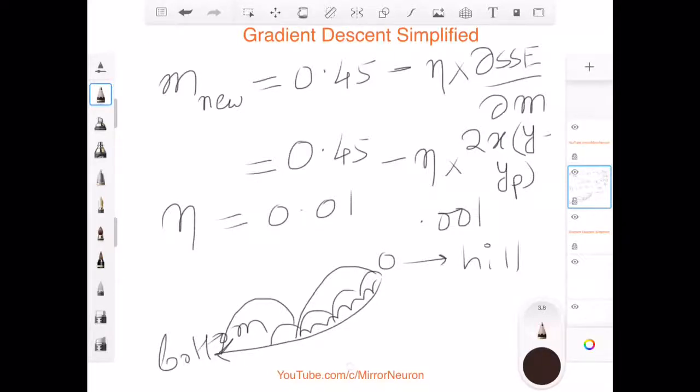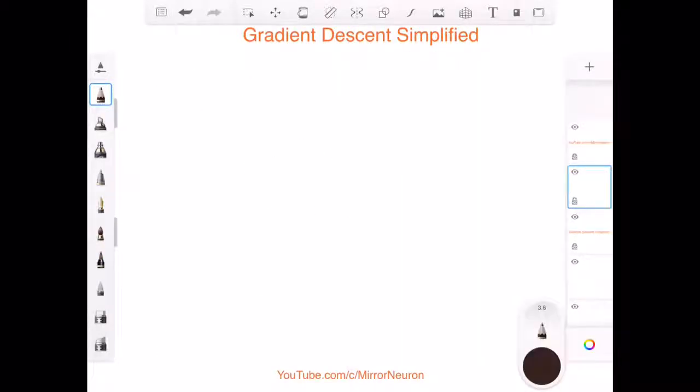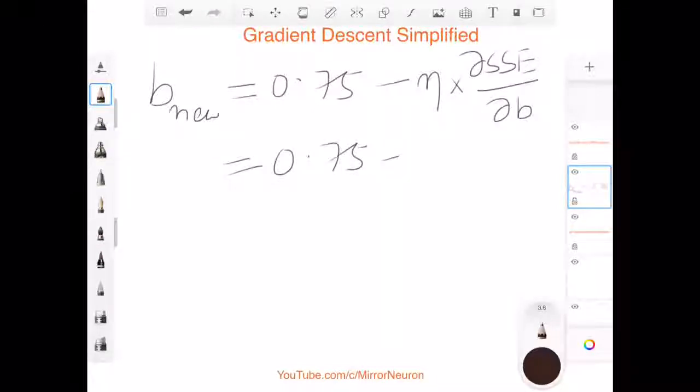So this was the new m. And what was the new b? New b was also very straightforward. b_new was exactly the same formula. The new is 0.75 which was the old value of b the intercept minus the learning rate times the derivative of sum of squared error with respect to b, and this was nothing but 0.75 minus 0.01 times 2 times y_original, the original sales price minus the predicted sales price.